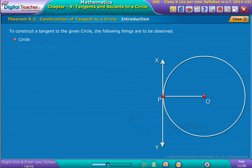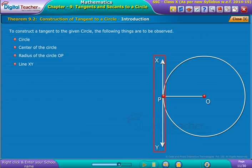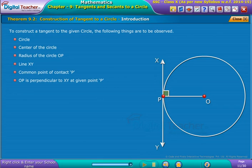Circle, center of the circle, radius of the circle OP, line XY, common point of contact P. OP is perpendicular to XY at given point P.